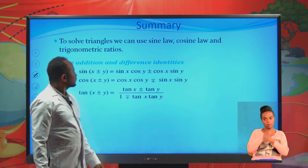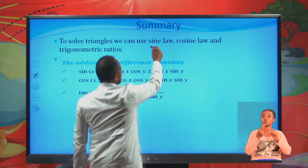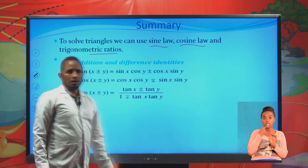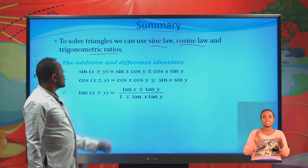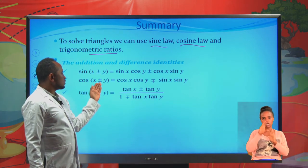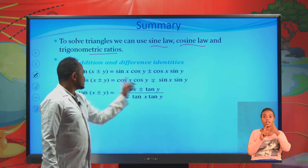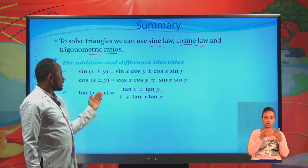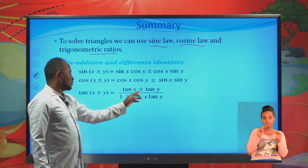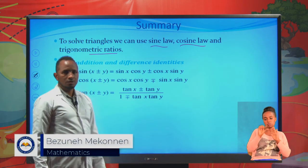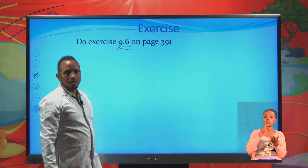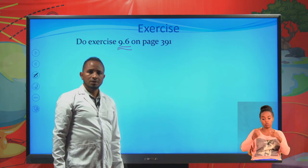To summarize: to solve triangles, we can use sine law, cosine law, or trigonometric ratios. We also covered sum and difference identities: sine of x plus or minus y equals sine x cosine y plus or minus cosine x sine y; cosine of x plus or minus y equals cosine x cosine y minus or plus sine x sine y; and tangent sum and difference formulas. Please do exercise 9.6 on page 391. This is all for today's lesson. Until next lecture, goodbye.